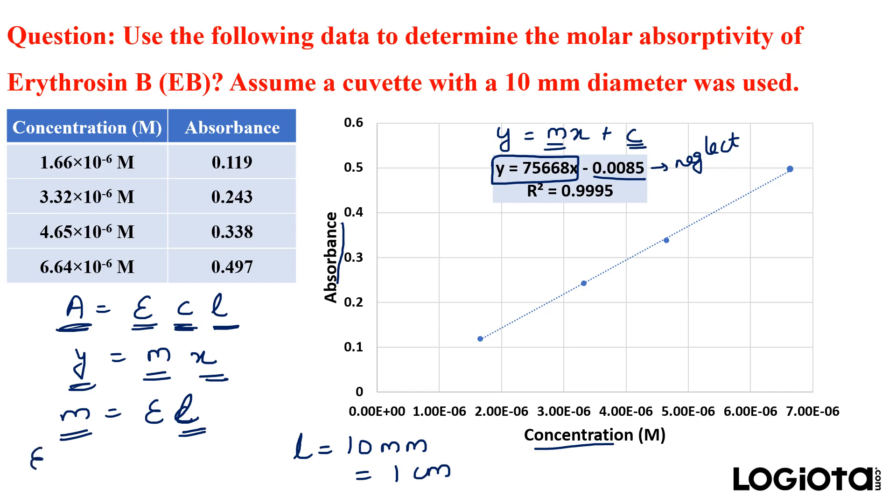Now epsilon equals m upon l. So we will put the value here m is the slope which is 75668 upon l is 1 centimeter. So that will be equal to 75668.